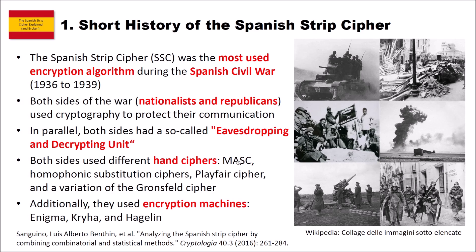They also used homophonic substitution ciphers — and the Spanish Strip Cipher is such a homophonic substitution cipher — as well as Playfair ciphers and a variation of the Gronsfeld cipher, which I have not yet made a video about but may do in the future. Additionally, they used encryption machines: the Enigma, the CRIHA machine, and Hagelin machines. On the right side you can see a picture from Wikipedia showing some examples from the Spanish Civil War.